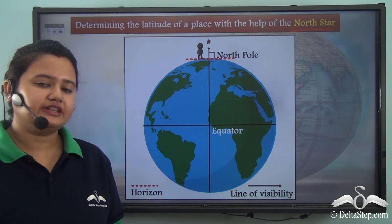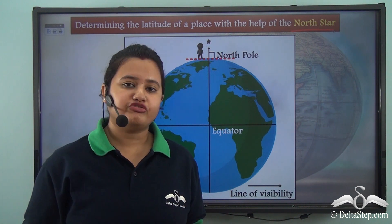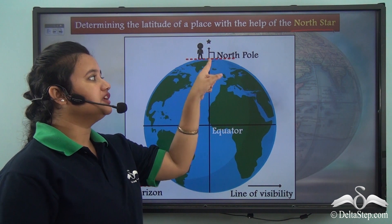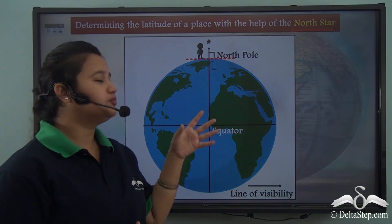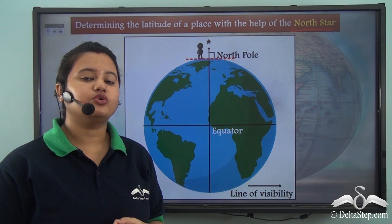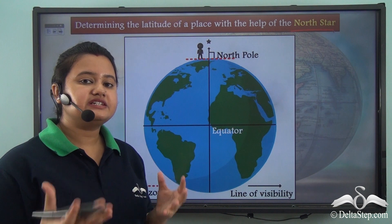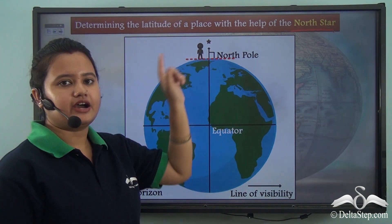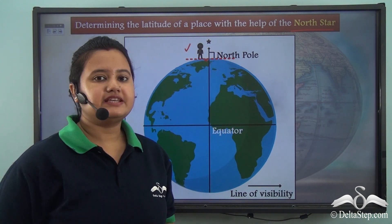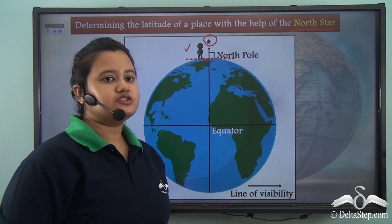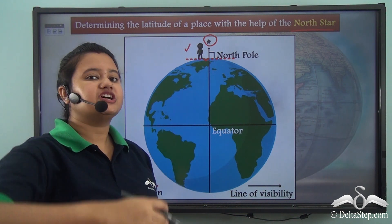The position of the North Star is fixed in the night sky. In fact, the North Star is situated right above the North Pole — that is, the North Star points to the geographical North Pole, and hence this star is also known as the North Star. Suppose an observer is standing at the North Pole. Since the North Star points to the geographical North, the observer will find the North Star just above his head.